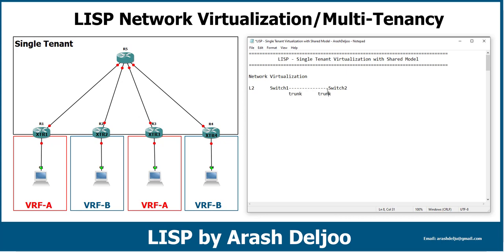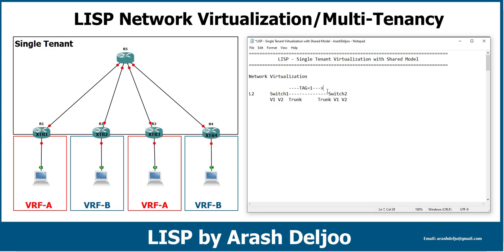Because of that trunk interface, we can pass traffic with different VLANs using a tag. For example, in Switch 1, assume we have a computer from VLAN 1 and another computer from VLAN 2. In Switch 2, we also have two computers — one from VLAN 1 and one from VLAN 2. We can send the traffic of the VLAN 1 computer from Switch 1 to Switch 2 with tag 1, and with this tag, we identify which VLAN the traffic is destined for.